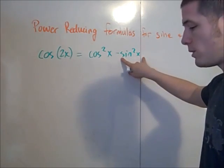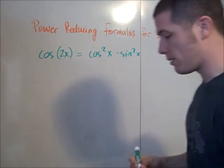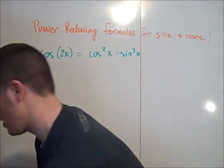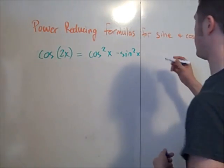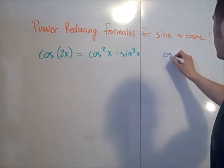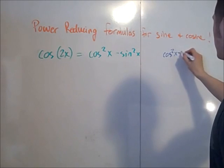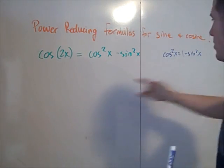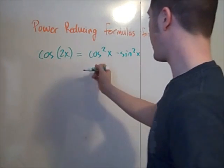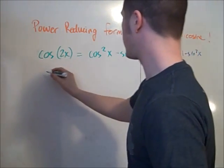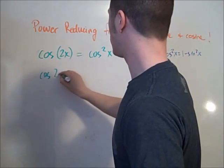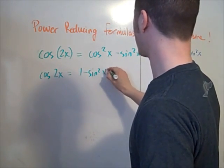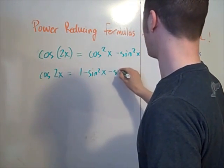So we're going to make a substitution here using the trigonometric Pythagorean theorem. We know that cosine squared x is 1 minus sine squared x. So we'll make that substitution right here, and we have that cosine 2x is equal to 1 minus sine squared x minus sine squared x.